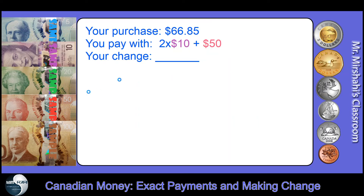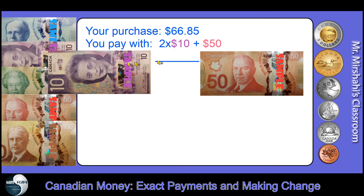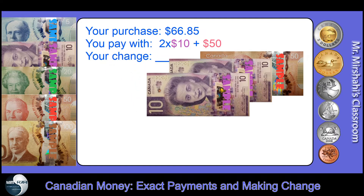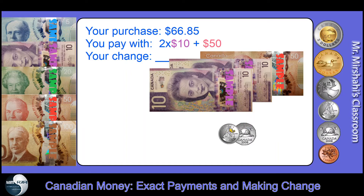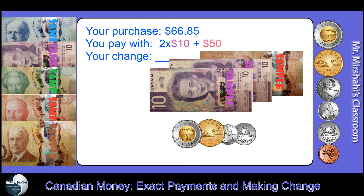You have two $10s and a $50 — that's $70. Your purchase amount is $66.85. We passed 75 cents, so the next 25 is $0 — meaning we go to the next dollar. Add a nickel: 85 cents plus a nickel is 90 cents, and a dime makes the next dollar — $67. Then $67 to $68 to $70 with one-dollar and two-dollar coins. Your change is $3.15.